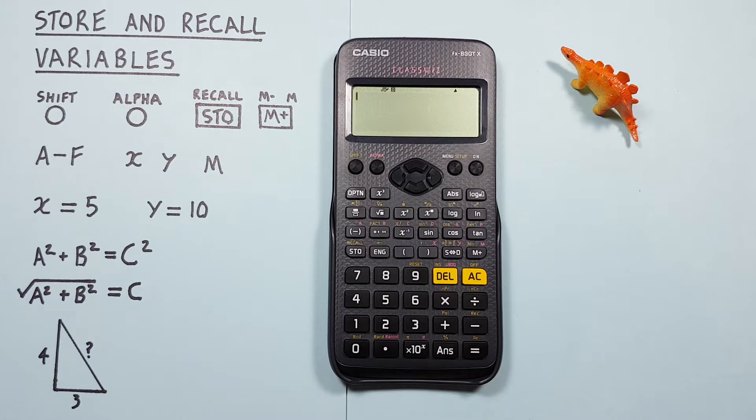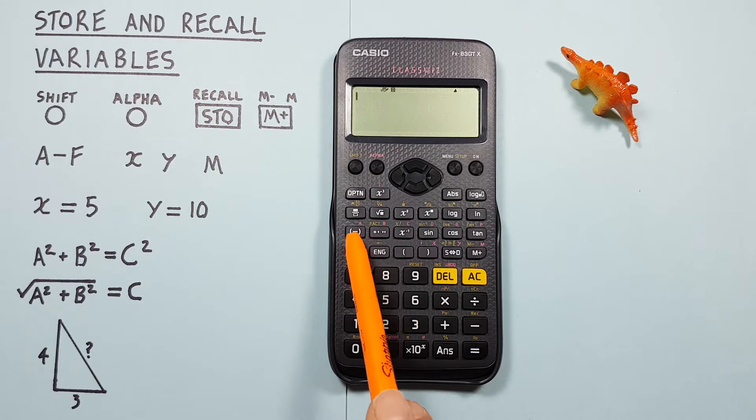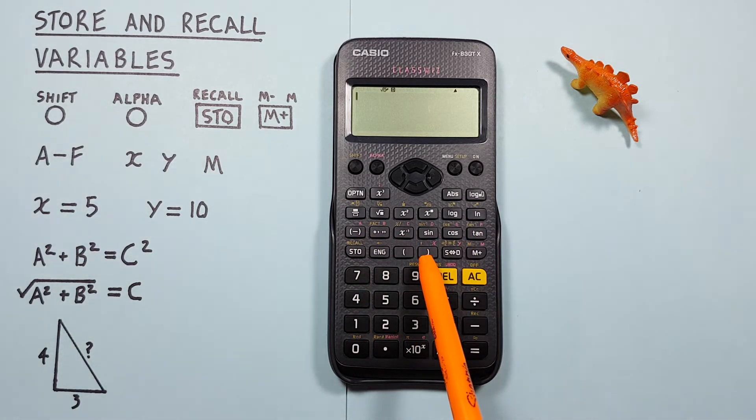We'll also be using the A through F, X, Y, and M memory slots that are located along these keys indicated in red.